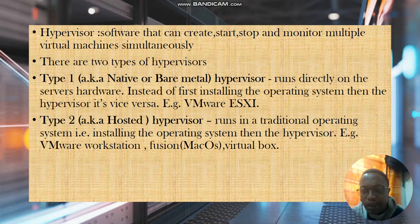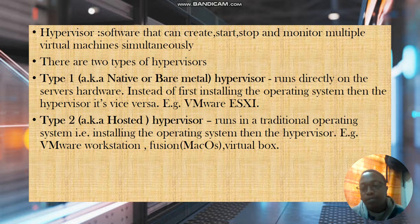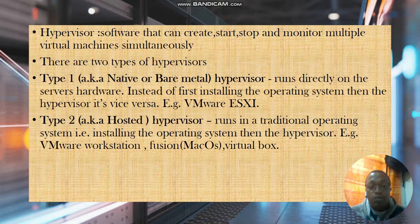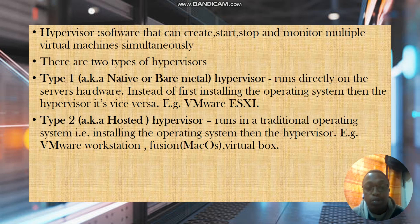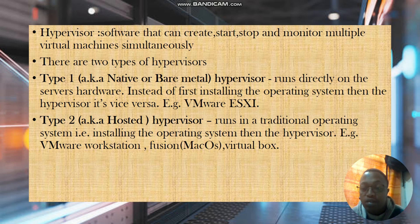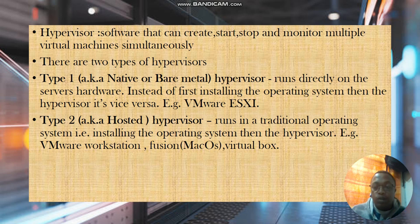An example of a type one hypervisor is VMware ESXi, which is mostly run in data center applications. The second type is called a hosted hypervisor — you run an operating system, download this hypervisor, and it helps you create other machines inside your operating system. Examples are VMware Workstation for Windows users, VMware Fusion for macOS users, and VirtualBox for Windows users.